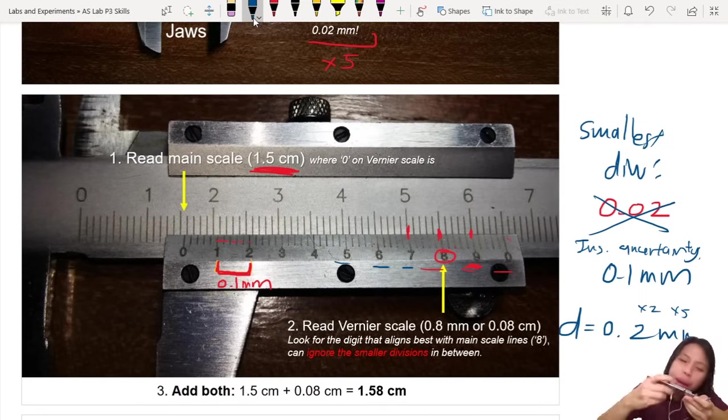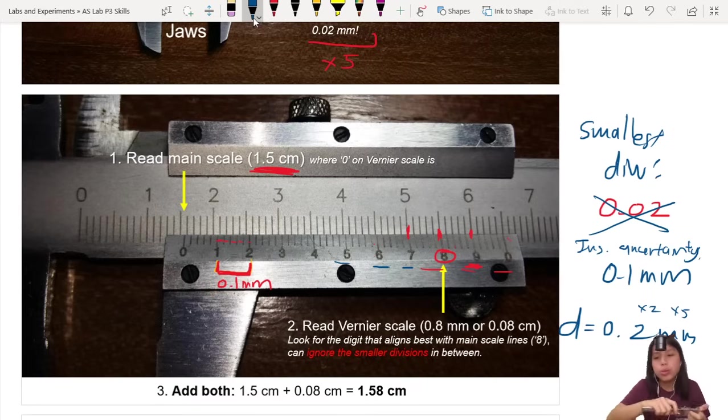Okay? Because you have, you know, parallax error when you're reading the vernier caliper, all this kind of problem. Okay? So use a bit more to make sure you get what you need.